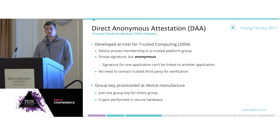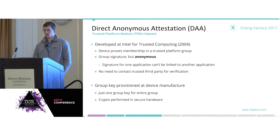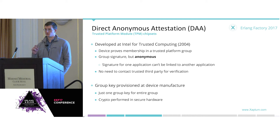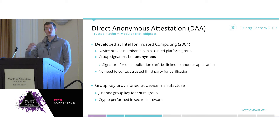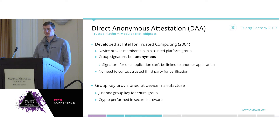Luckily there's a technology that's been shipping in Intel processors since 2008 and in ARM TPM ships recently, called Direct Anonymous Attestation, that will let us solve this problem. Working through what Direct Anonymous Attestation means: attestation means a device can prove its membership in a particular group — not prove its individual identity, but just that it's a member of some group. That enables anonymity — you don't know who that specific individual device is, just that it's part of a group. Its anonymity set is some manufacturing group. And then Direct means there's no need to trust a third party for validation — given the group public key associated with that group, you can validate a signature from a member of that group.